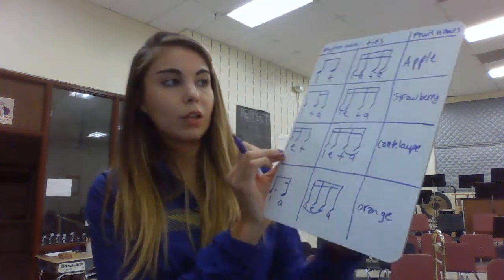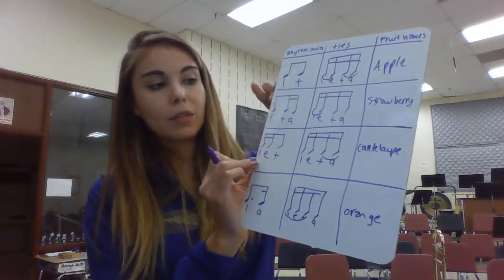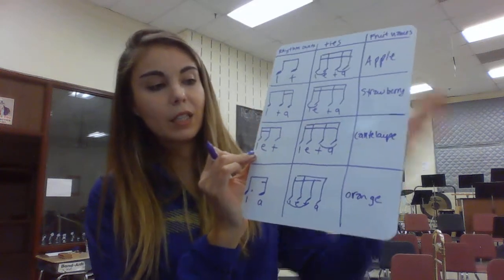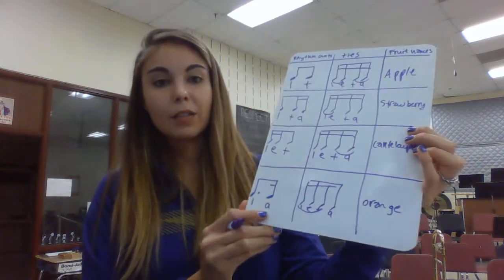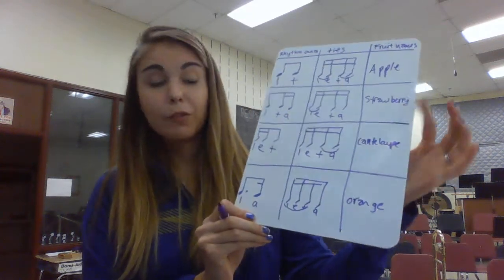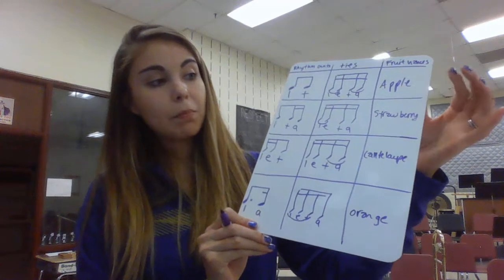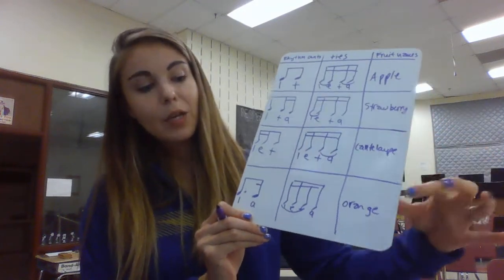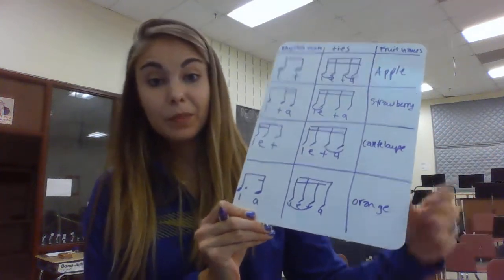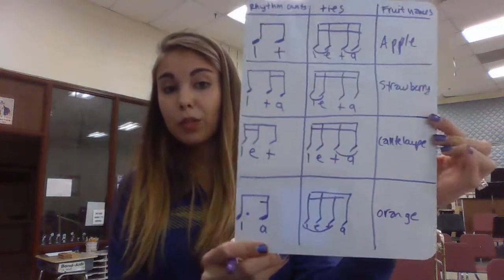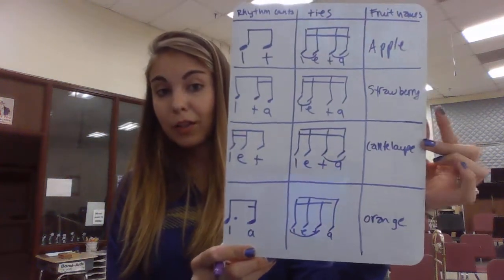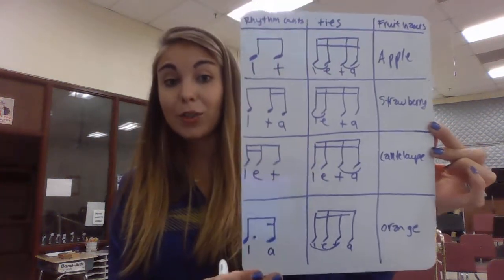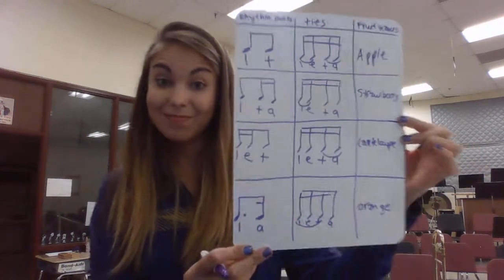So here are all our rhythms: one and, one and a, one e and, one a. Or the fruit names: apple, strawberry, cantaloupe, orange. There's your rhythm chart that you should have completed. Take a picture of it and submit that as your assignment for full credit. Thanks.